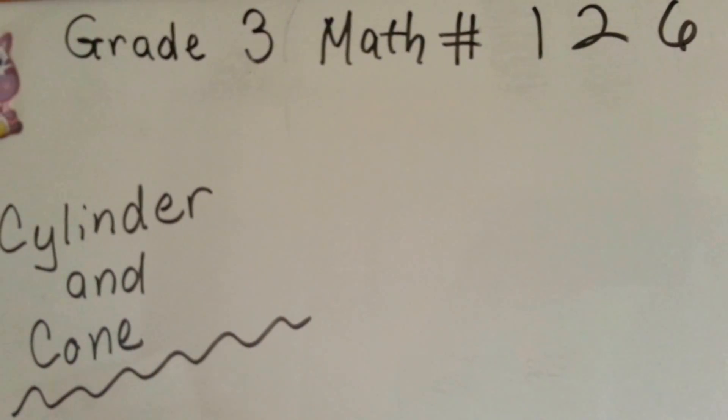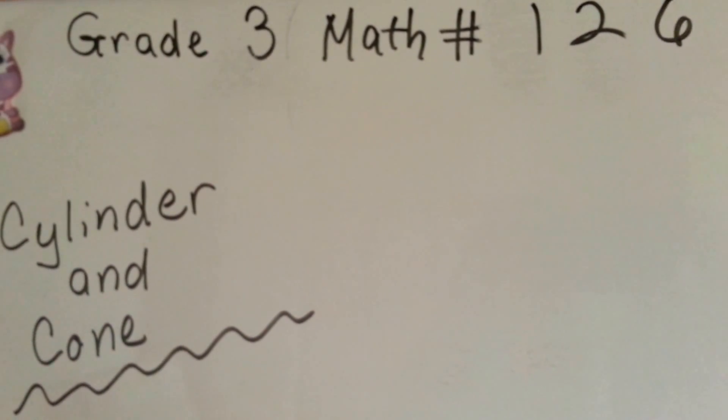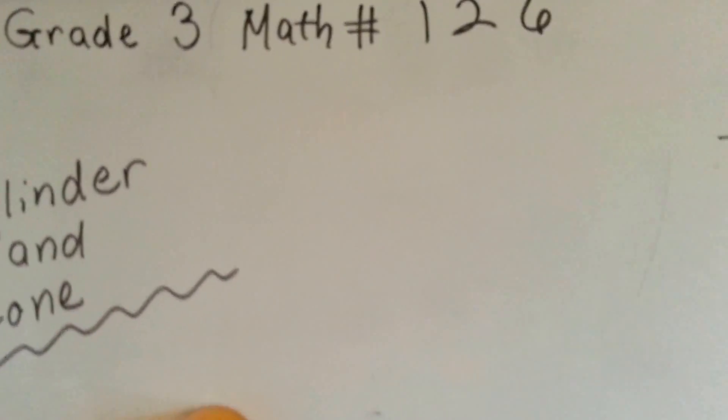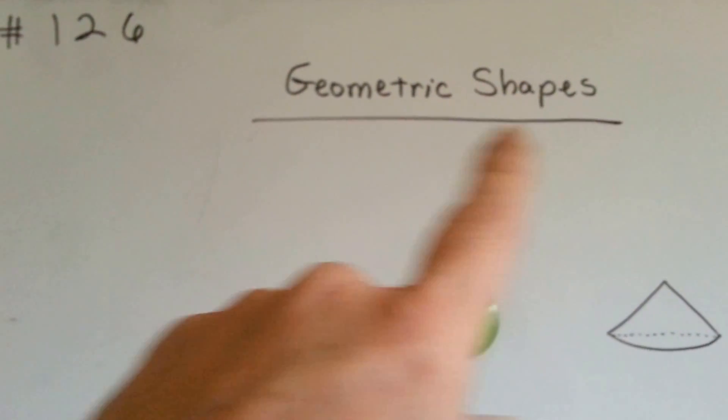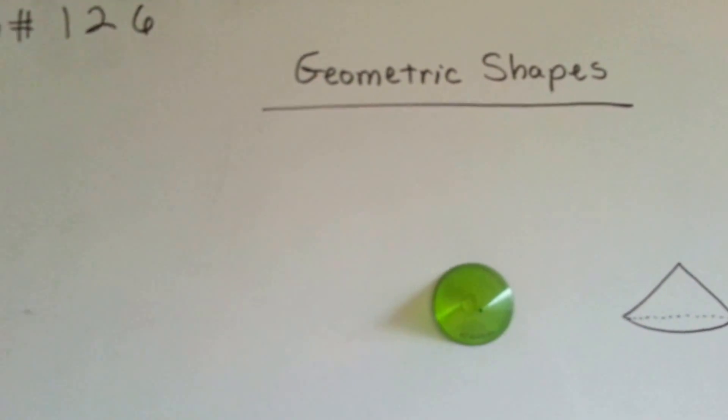Grade 3 math number 126, Cylinder and Cone. I'm going to show you two geometric shapes. Geometric shapes, it's like geometry shapes.